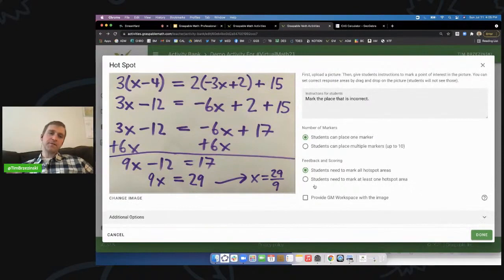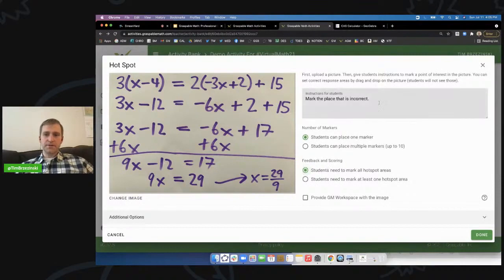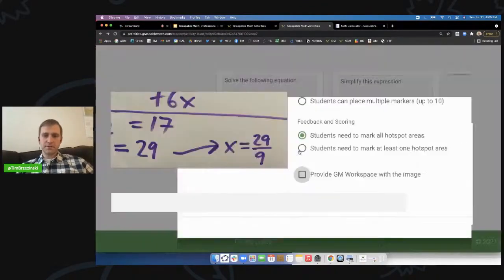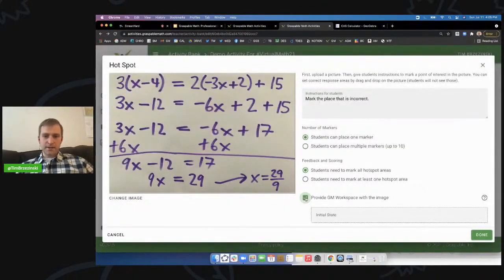So I have two different problems. I have a problem here with one mistake. So I'm going to say one marker and mark all hotspots areas. Mark the place that's incorrect. And then I'm going to provide a workspace. Remember you guys got to solve the equation after I did it because I gave you that.